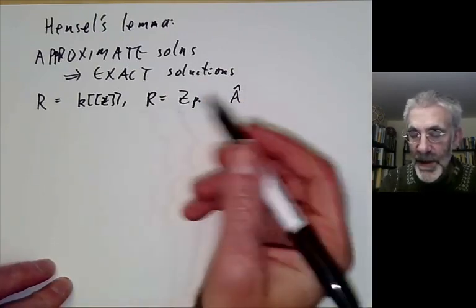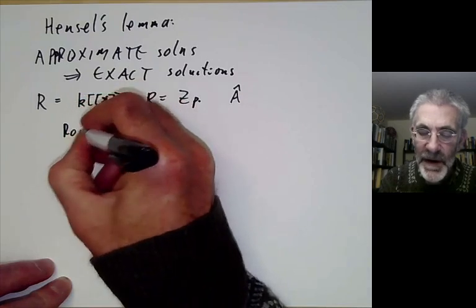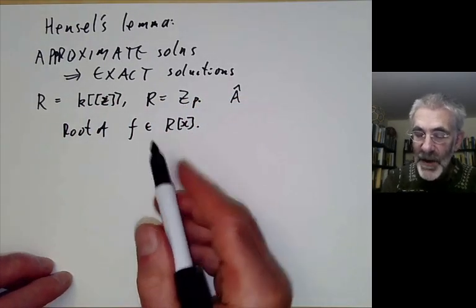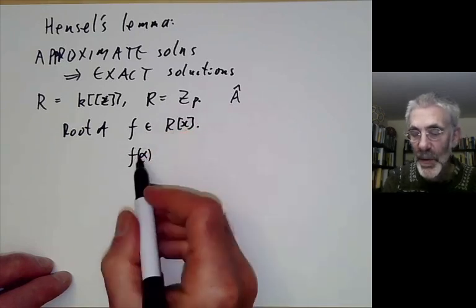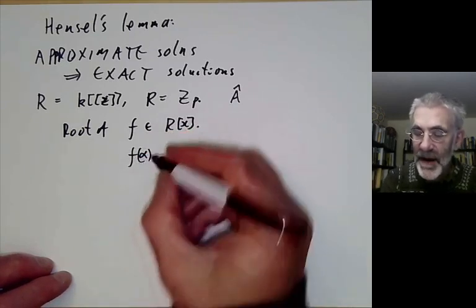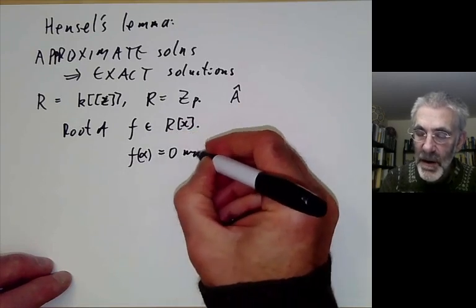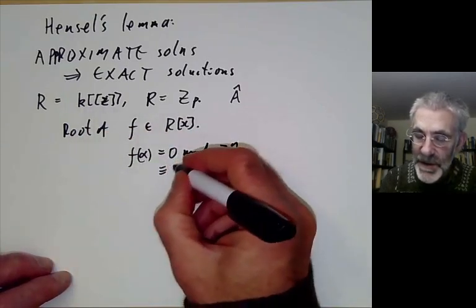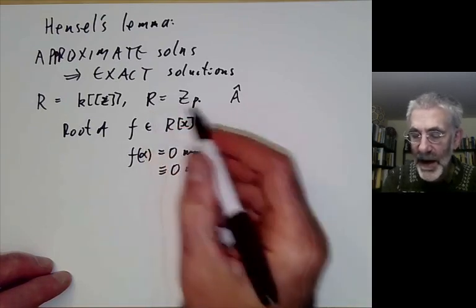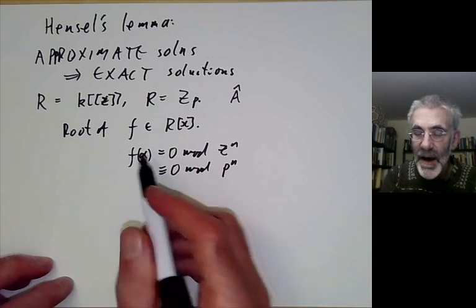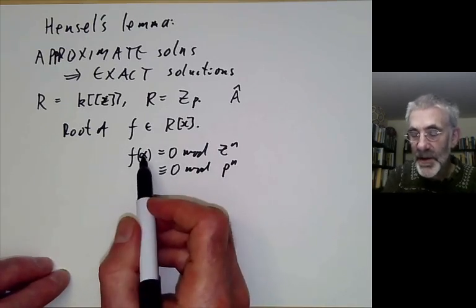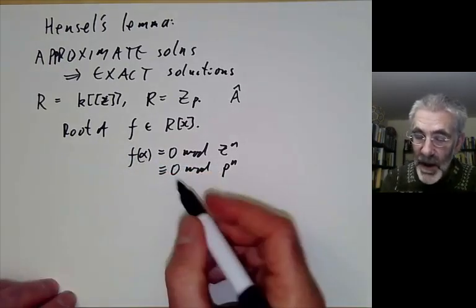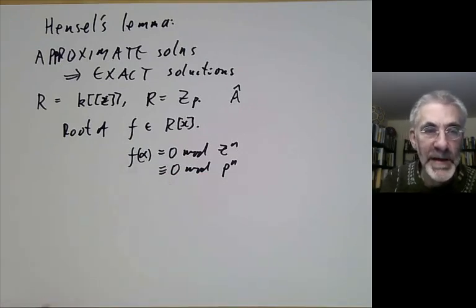We have some problem — for instance we might want to find a root of a polynomial f with coefficients in r. We might find an approximate root alpha: for instance f(alpha) is equal to zero modulo z to the n, or congruent to zero modulo p to the n, for some value of n. Hensel's Lemma says that under certain conditions, if we've got an approximate root then we can modify it slightly to obtain an exact root. There are enormous numbers of versions of Hensel's Lemma in the literature.